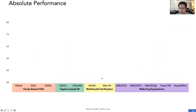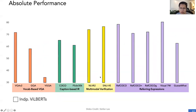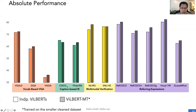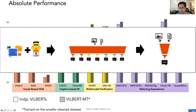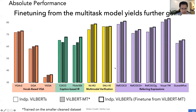Checking the absolute performance across all tasks, the multi-task model outperforms 10 out of 12 independent ViLBERT models, and the slightly lower-performing cases are very similar. If we use the multi-task model as a starting point and fine-tune on single-task datasets, we see further gains for each task.